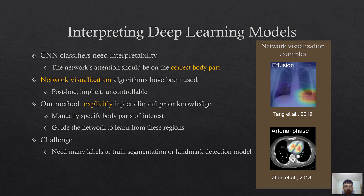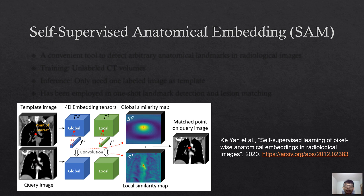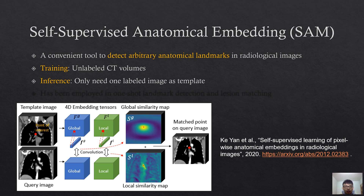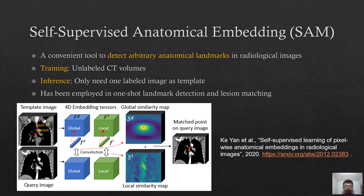Recently, Yan et al. proposed an algorithm called Self-Supervised Anatomical Embedding, or SAM. SAM is a convenient tool to detect arbitrary anatomical landmarks in radiological images, such as CT and X-ray. It is self-supervised, so only requires unlabeled images in training. During inference, it takes only one template image with labeled landmarks, and then detects those landmarks in other images. It has been successfully employed in one-shot landmark detection and lesion matching.